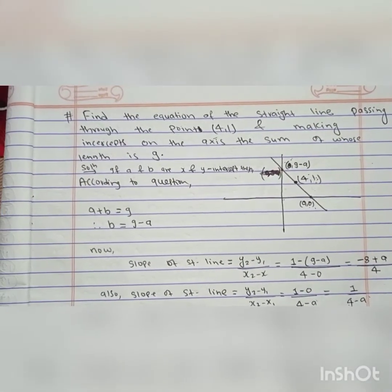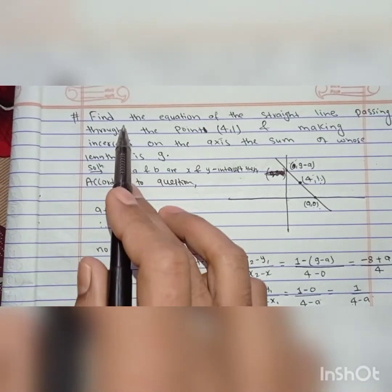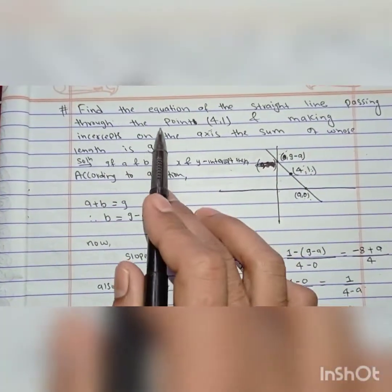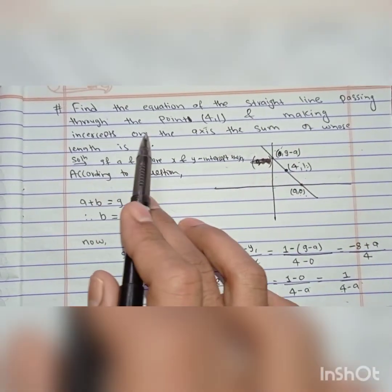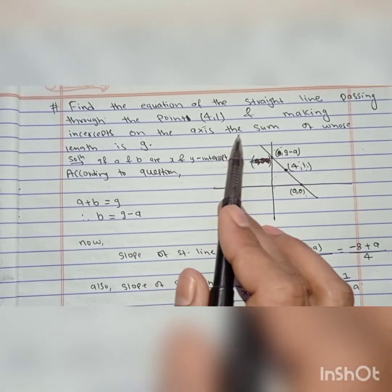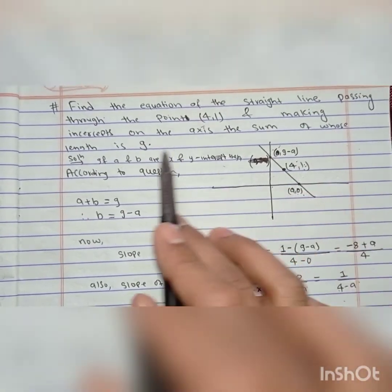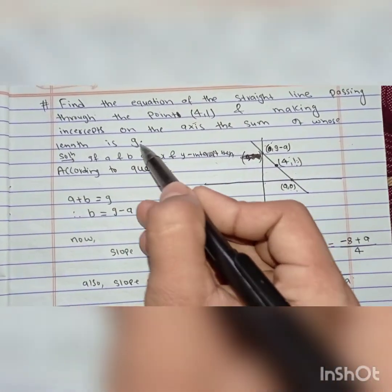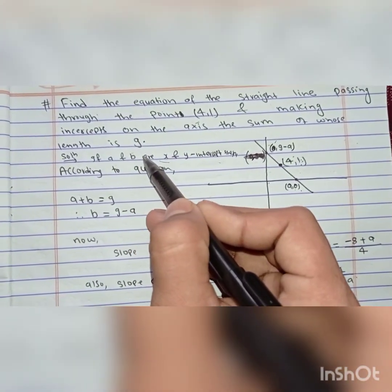I'm going to solve a problem from coordinate geometry. The question is: find the equation of the straight line passing through the point (4, 1) and making intercepts on the axes whose sum of lengths is 9.